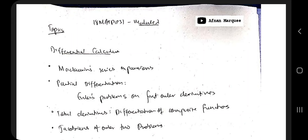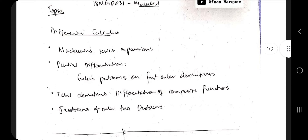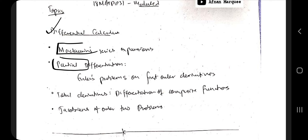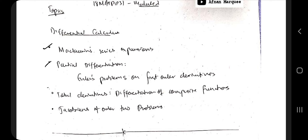Hello everyone. Today in this video we'll be discussing the second module of 18 Math DIP 31. This second module is about differential calculus. We have four topics: the first is Maclaurin's series expansion, the second is partial differentiation using Euler's theorem, the third is total derivatives, and the last topic is Jacobians. We'll be discussing all these topics using one or two examples.